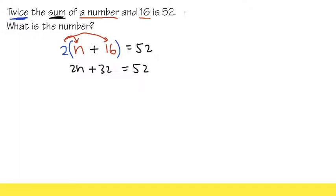And then, to solve for N, we can minus 32 on both sides, so this and that will be canceled, and then we'll continue. This is just 2N, and this is equal to 52 minus 32, that's just equal to 20.